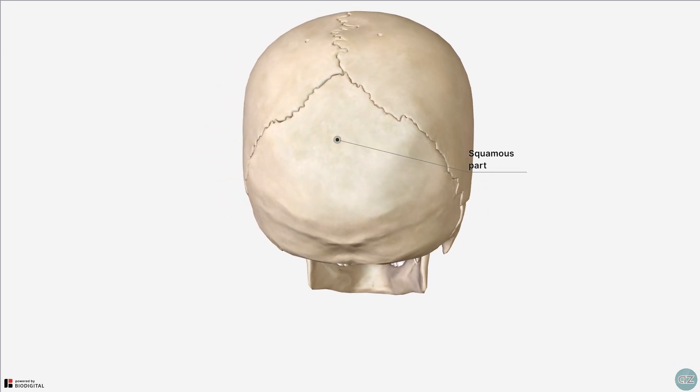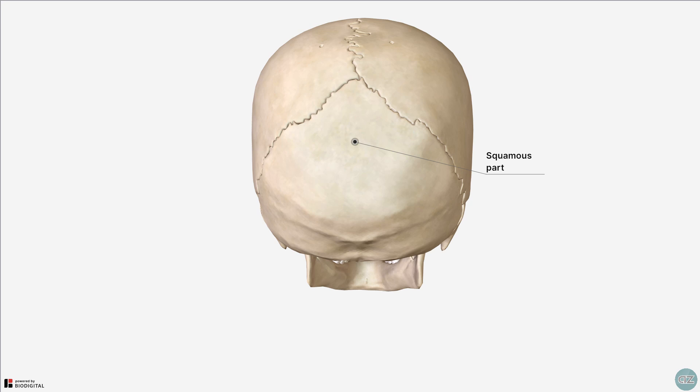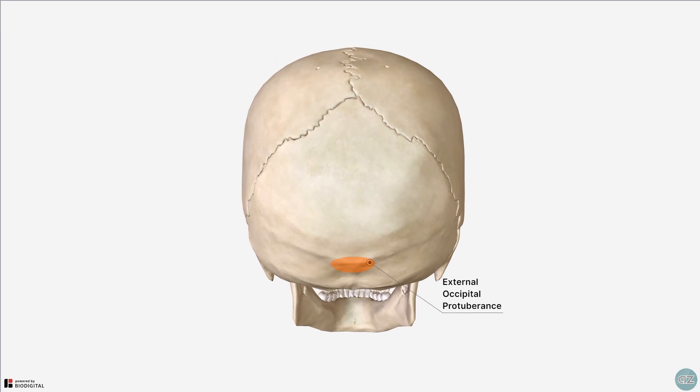Looking posteriorly at the squamous part of the occipital bone, there are a few key landmarks to note. The first is the external occipital protuberance in the midline. The most prominent point of this is known as inion. Extending either side from the external occipital protuberance are the superior and inferior nuchal lines.